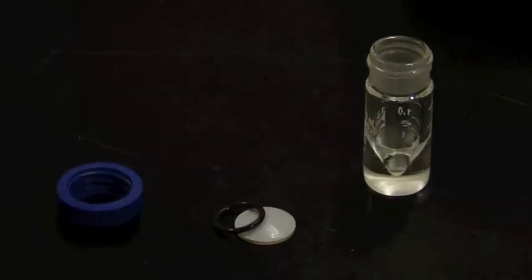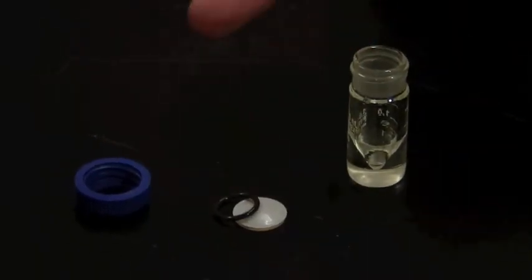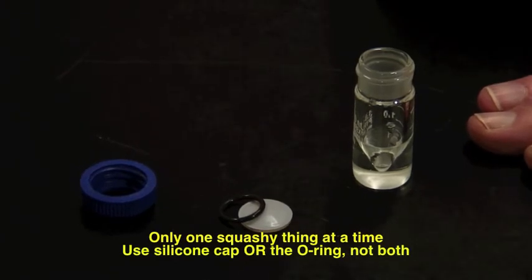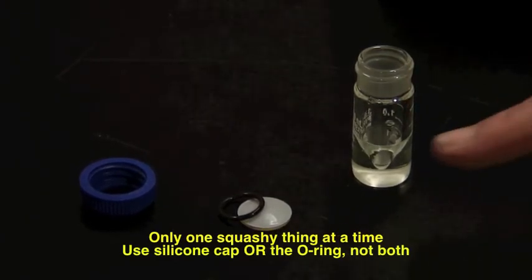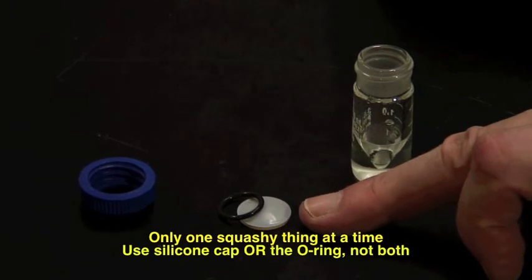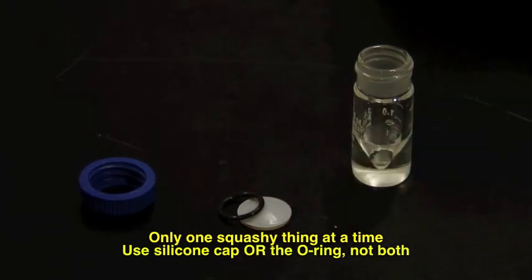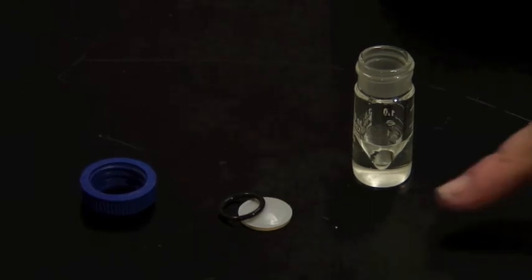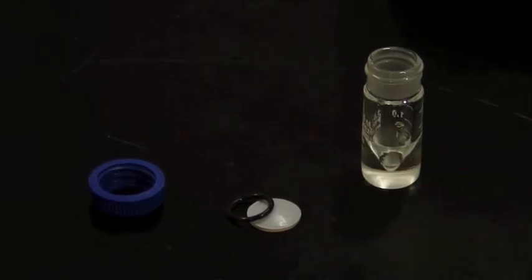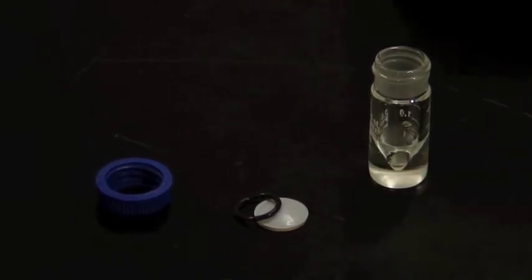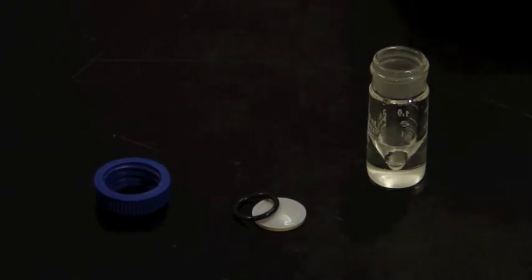Assembling the caps onto a vial, the rule is only one squashy thing at a time. So don't try putting the silicone cap and the o-ring in at the same time. You'll get a leak. If you want a lid, you just use the silicone cap. If you want to connect it, then you use the o-ring to seal.